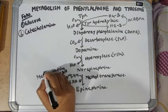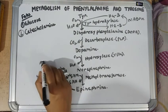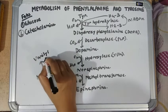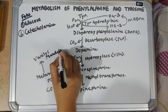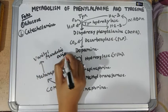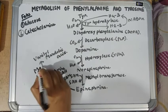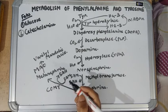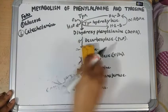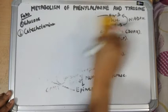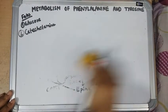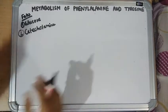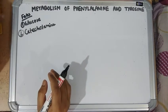Metanephrine is then converted into vanillylmandelic acid (VMA) by the enzyme monoamine oxidase (MAO). This is the pathway by which catecholamines are produced and degraded. Epinephrine and norepinephrine increase blood pressure and are released in response to fight-or-flight responses, exercise, and hypoglycemia.